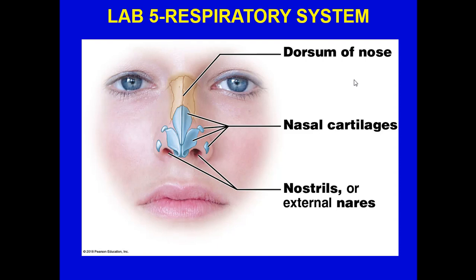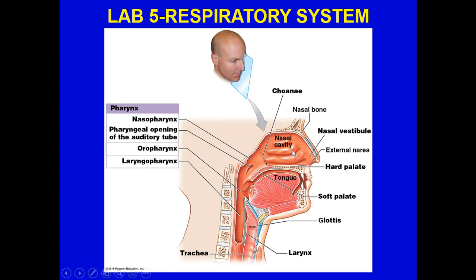Looking at the living anatomy, the dorsum of the nose is the upper bridge consisting of the nasal bones. Below that, structure is maintained by nasal cartilages. The nostrils are also called external nares openings. A break in the upper bony part of the nose heals faster than a break in the lower cartilaginous part, because cartilage is much slower to heal than bone.